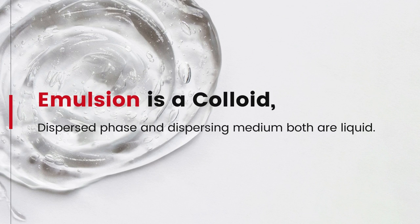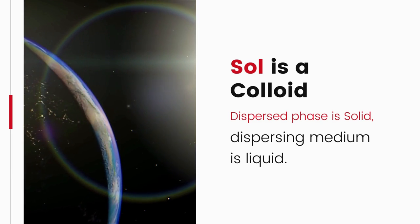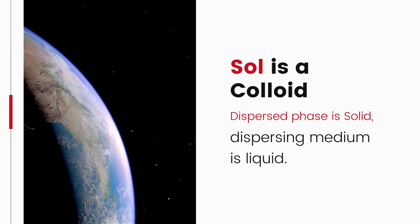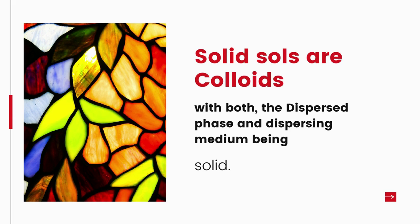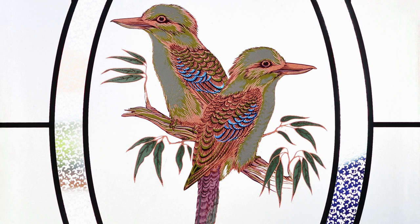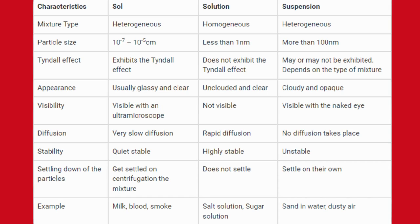Emulsions are colloids where both the dispersed phase and dispersing medium are liquid — examples include milk and face cream. Sols are colloids with dispersed phase solid and dispersing medium liquid — examples are milk of magnesia and mud. There are also solid sols, where both the dispersed phase and dispersing medium are solid — examples include colored gemstones and milky glass. Gels are colloids with dispersed phase liquid and dispersing medium solid — examples include jelly, cheese, and butter. You can go through the table to understand these better.